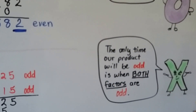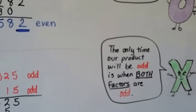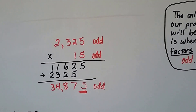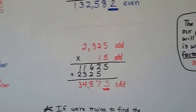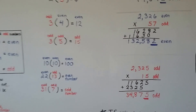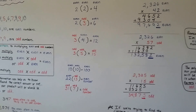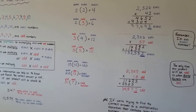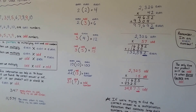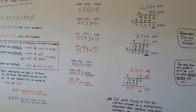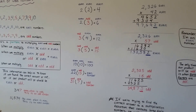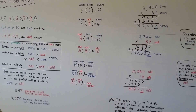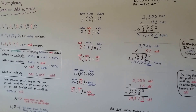The only time our product will be odd is when both factors are odd — when they're both odd, we get an odd product. Maybe this will help you when you're doing your homework or on your tests, so you'll know if you've made a good solution. You'll be able to catch it and say, 'I just multiplied two even numbers but got an odd answer — it must be wrong, I need to do it again.' Then you'll know if you made a mistake or not. I'll see you next video, bye!